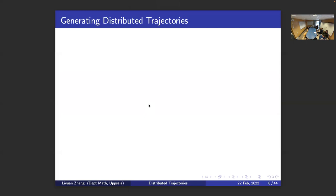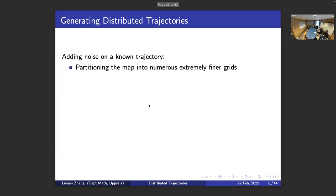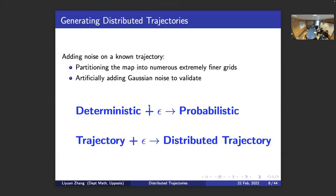I'll show how to manually generate distributed trajectories given these circumstances — by manually adding noise to the trajectory. First, we partition the map into numerous extremely fine grids, so every single grid represents a location that could have been recorded. Then we artificially add Gaussian noise to the trajectory to validate whether distributed trajectories would be generated in this way. As a result, the previous deterministic trajectory becomes probabilistic — transformed into distributed trajectories.